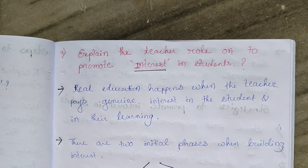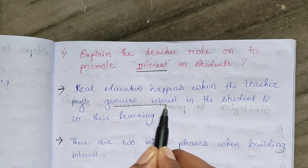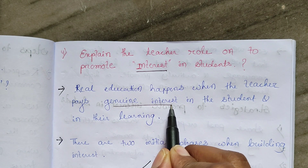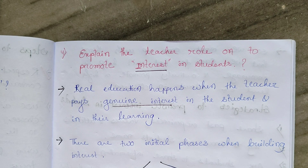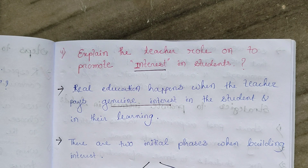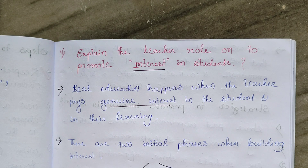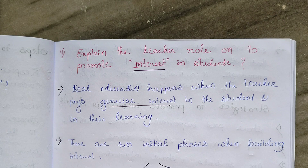Real education happens when the teacher pays genuine interest first. The first thing is whose interest is important — the teacher's interest. The teacher must have interest in the students so that she can create interest in them. If the teacher doesn't have interest in teaching or in students, how can she maintain the class and promote interest?